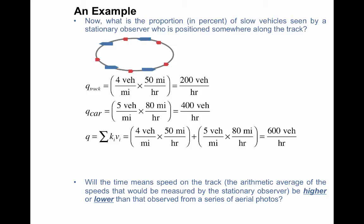So for the point-based proportion, we're going to use the point-based measure to allocate the proportion. So we're going to use the ratio of the flows. So in this case, the proportion of slow vehicles is just the same as the proportion of the flows. So 200 divided by 600 is 33%. So of course, you can confirm that that proportion is lower than what we saw previously from the aerial photos.